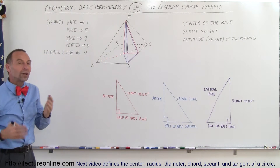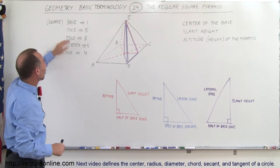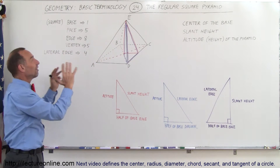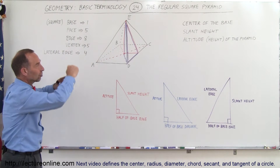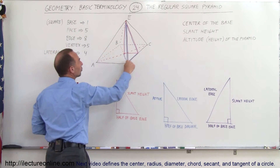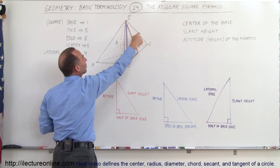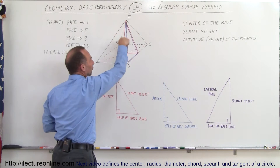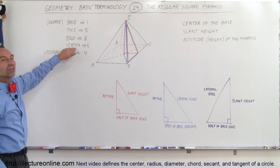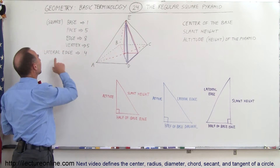Now notice we have some names here: the base, the face, the edge, the vertex, and the lateral edge. The base is the side at the very bottom on which the pyramid sits. There are five faces total — four slanted triangular faces and one square face at the bottom. There are eight edges: four around the base and four lateral edges on the slanted sides. There are five vertices: four at the corners of the base and one on top.